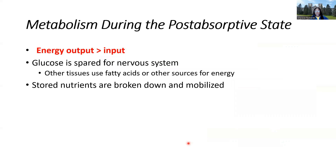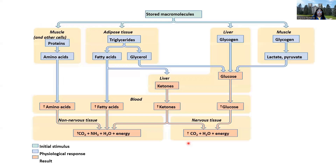Now let's talk about the opposite: the post-absorptive or fasted state. This is where energy output exceeds energy input — typically after 12 to 14 hours without food. Glucose is going to be spared for the brain, which prefers glucose over any other nutrient. Other tissues can use fatty acids adequately, but the brain really prefers glucose. Nutrients begin to be broken down: glycogen stores in the liver, triglycerides in adipose tissue and liver, and other stored molecules are liberated.